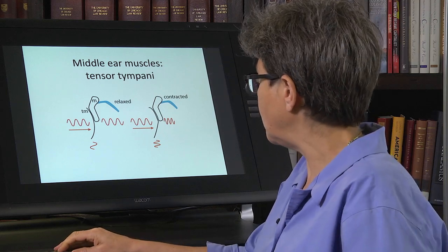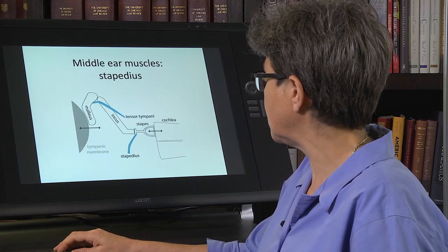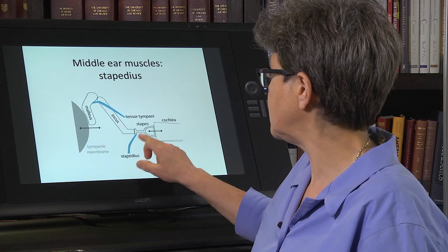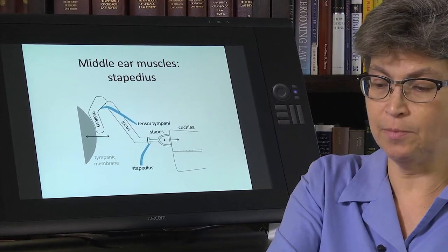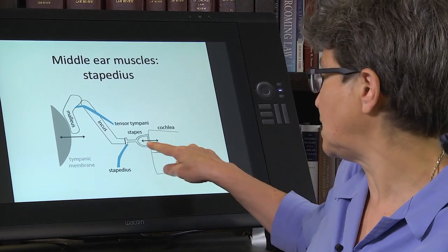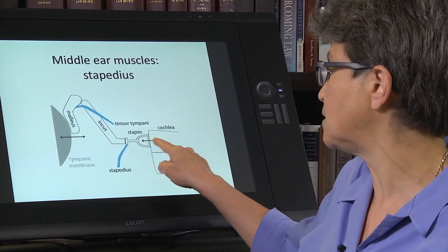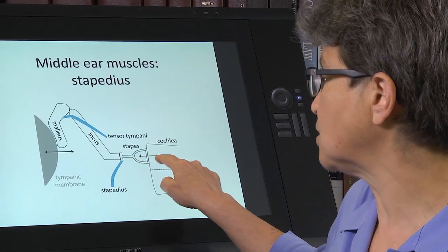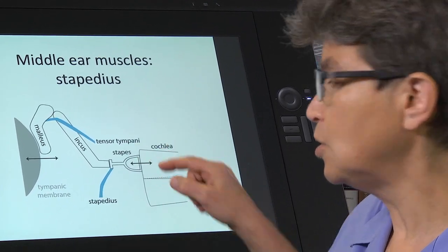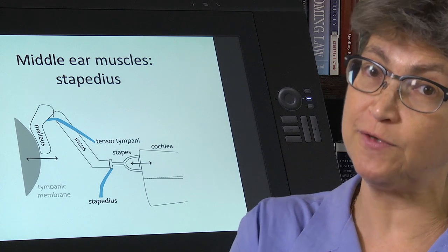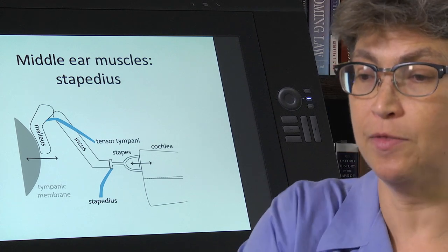The other middle ear muscle is the stapedius, and the stapedius simply is a muscle that is going to pull back on the stapes. It is the stapes, it is the movement of the stapes that's going to set up the sound waves in the cochlea.